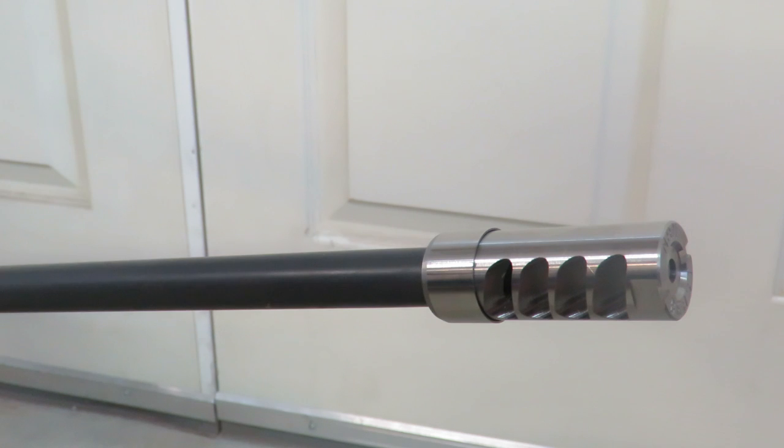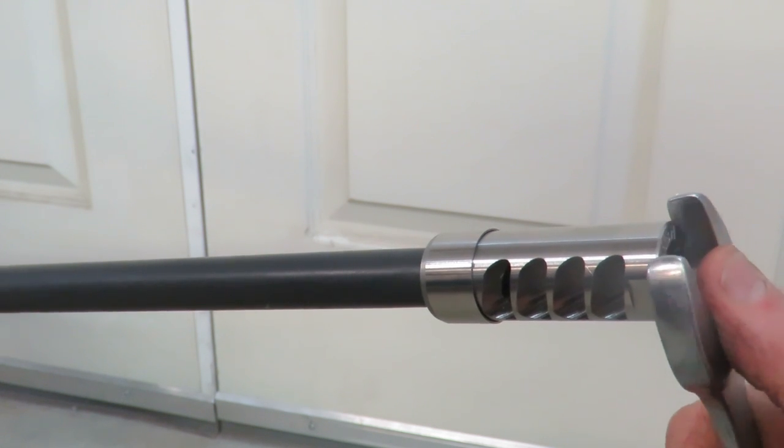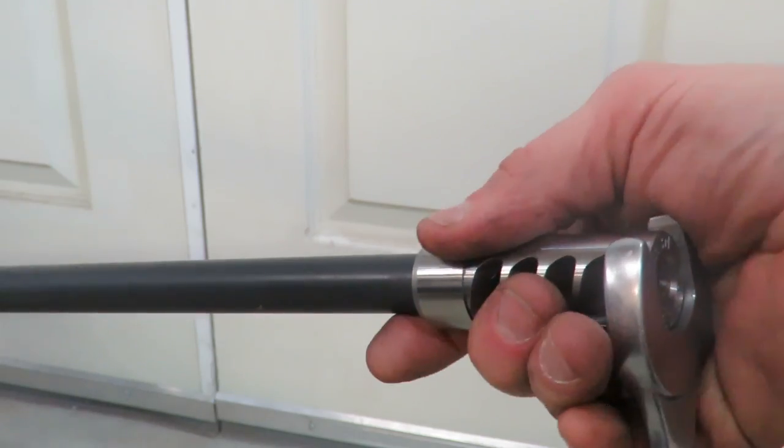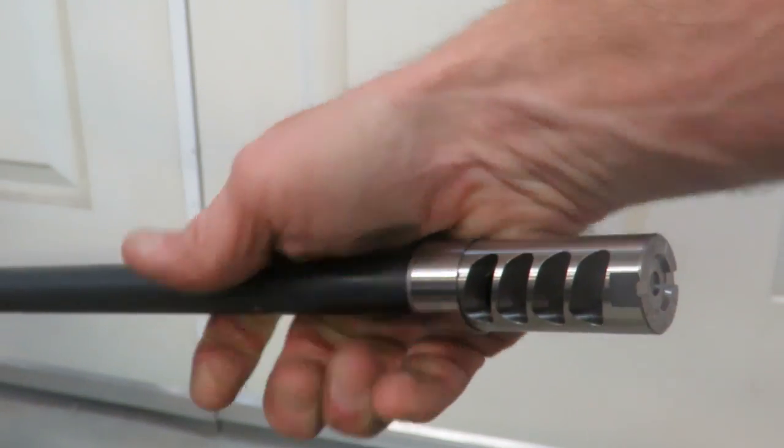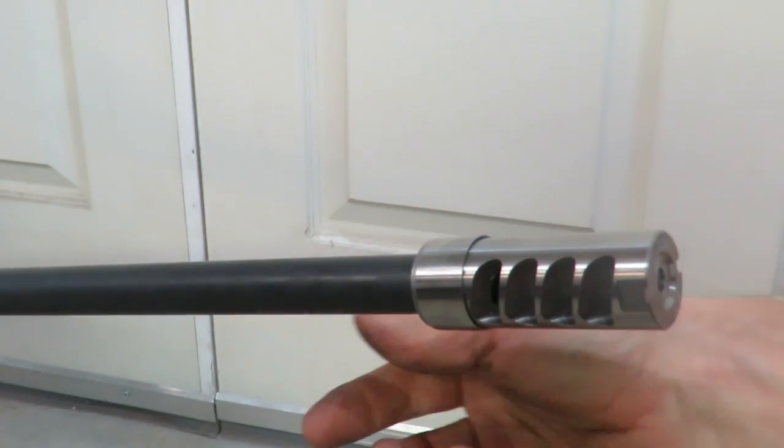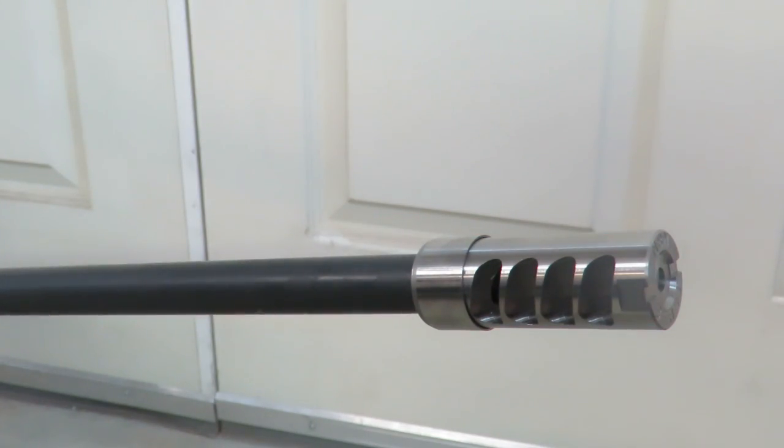Then you'll take a 15-16 wrench or a crescent wrench and tighten it up. And so then you should be relatively close to timed correctly.